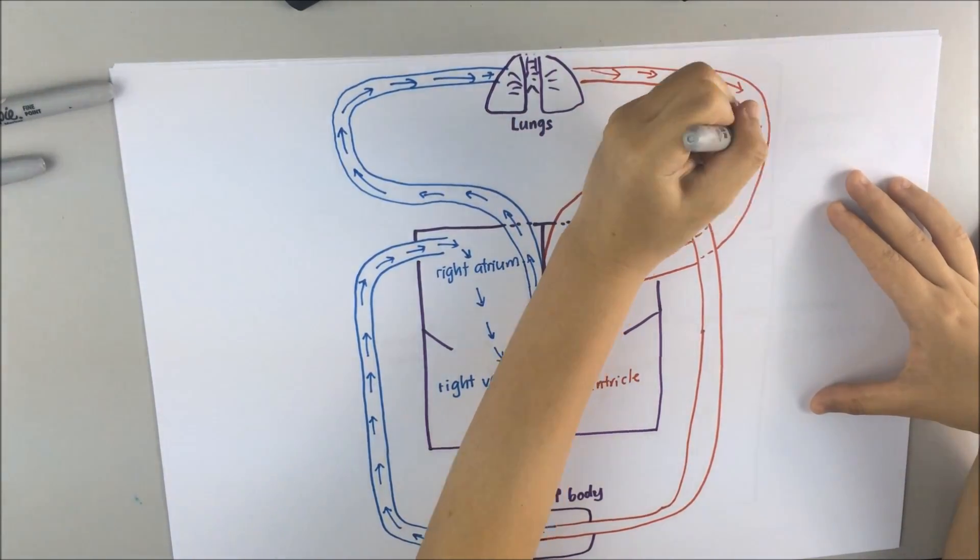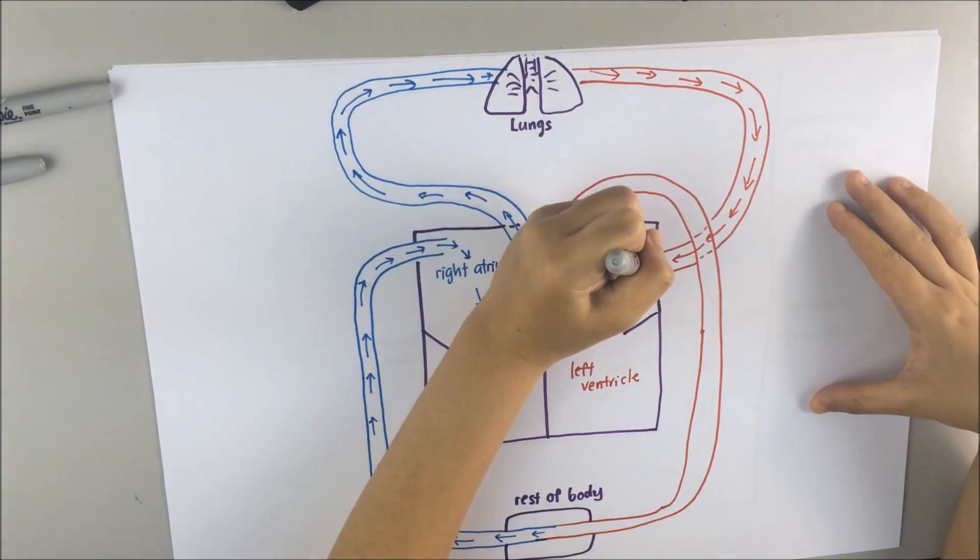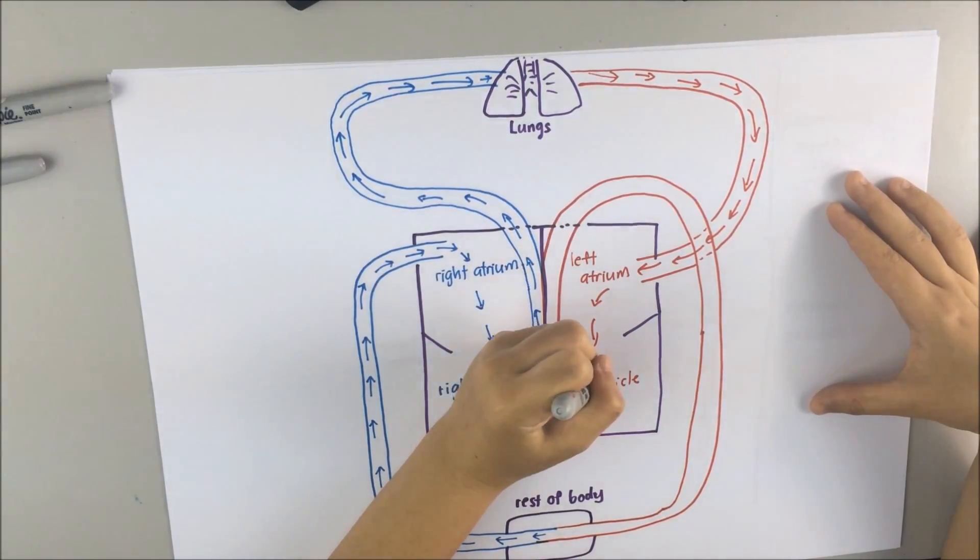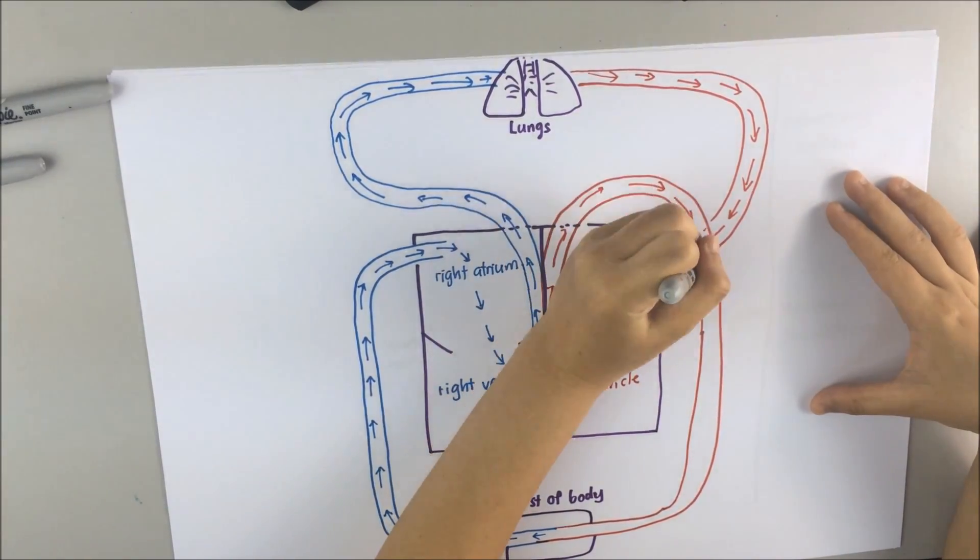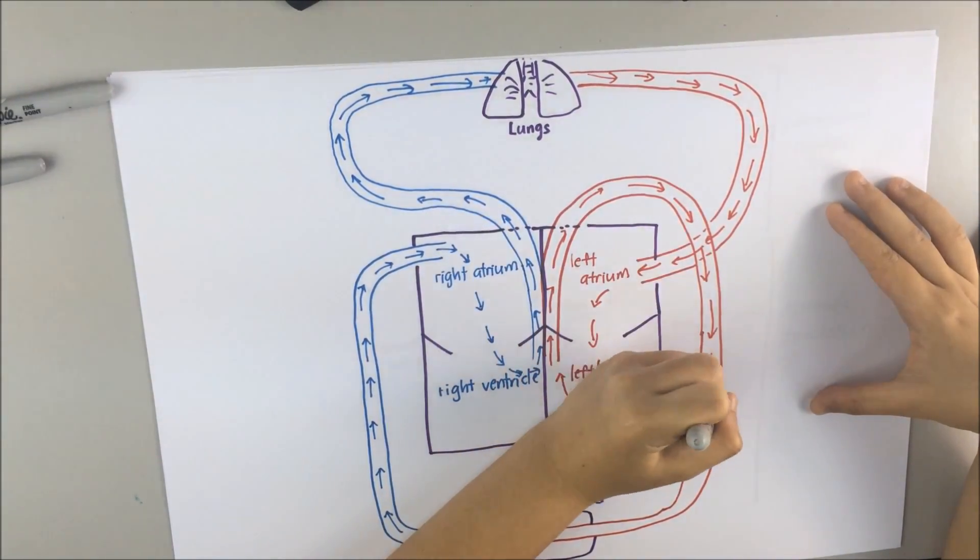Now the blood has become oxygenated blood. It flows back to the left atrium and then into left ventricle. And the blood in the left ventricle is pumped out through the rest of the body except lungs.